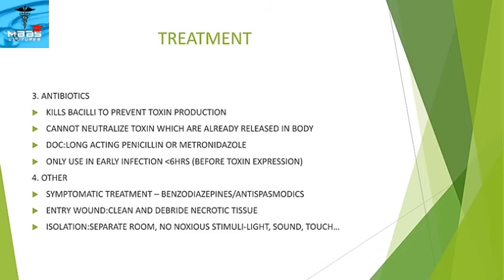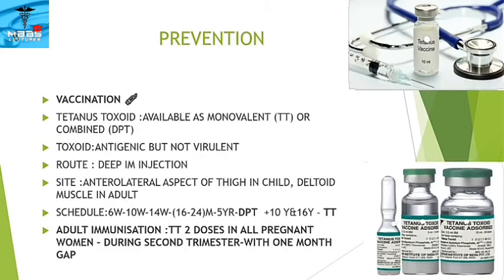The patient should be isolated in a separate room with no noxious stimuli like light, sound, or touch. Prevention is by vaccination using tetanus toxoid, available as monovalent TT or combined DPT form. The toxoid is antigenic but not virulent. It is given by deep intramuscular injection in the anterolateral thigh in children and deltoid muscle in adults. The immunization schedule includes DPT at 6, 10, and 14 weeks from birth, a booster between 16–24 months, and at 5 years. TT vaccine is given at 10 and 16 years, and two TT doses are prescribed for all pregnant women during the second trimester one month apart.